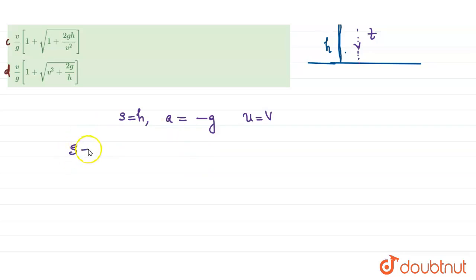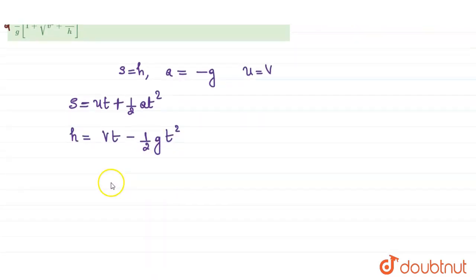We are familiar with the displacement equation, that is s equals ut plus half a t squared. We can substitute every value: h equals vt minus 1/2 g t squared. We can rearrange this equation, cross multiplying 2 and writing every term on the LHS.